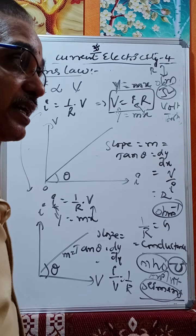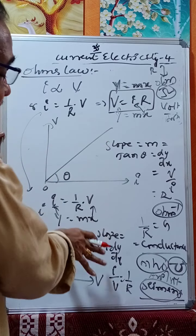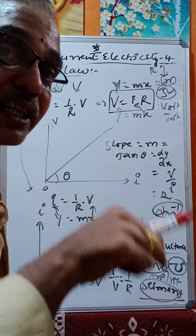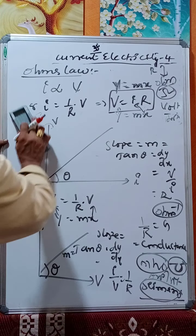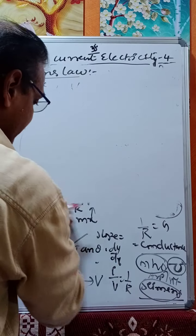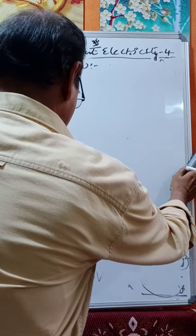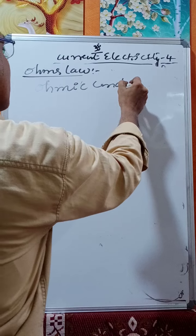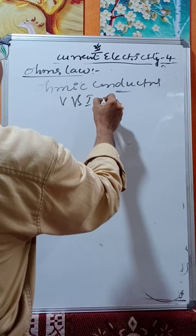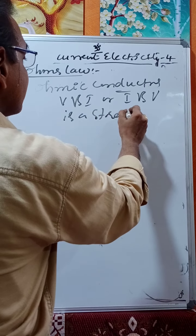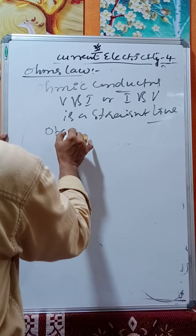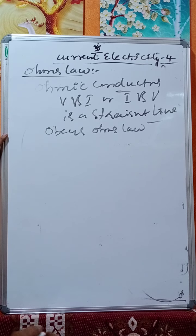Now is Ohm's law valid for all materials — conductors, semiconductors, and insulators? If the graph between voltage and current is a straight line, those materials obey Ohm's law and we call them ohmic conductors. For ohmic conductors, the V versus I or I versus V graph is a straight line passing through the origin.